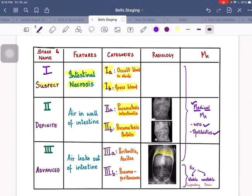Stage 2 is a definite case of NEC. In Stage 2, there is air in the wall of the small intestine. It's categorized into 2a and 2b. 2a is pneumatosis intestinalis and 2b is pneumatosis portalis. Pneumatosis intestinalis means air in the wall of the small intestine, and pneumatosis portalis means air inside the portal tract.